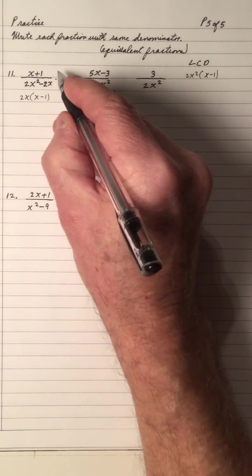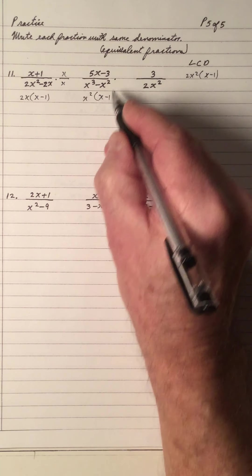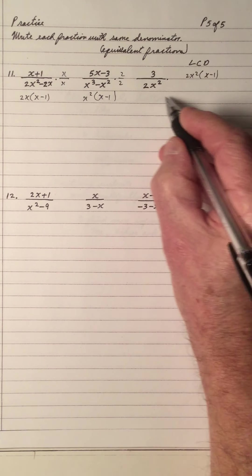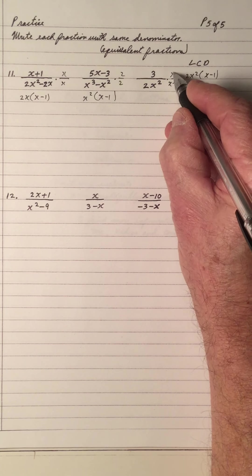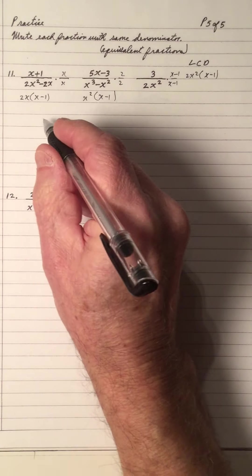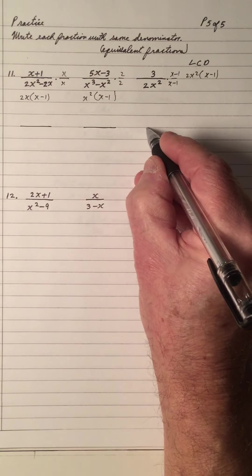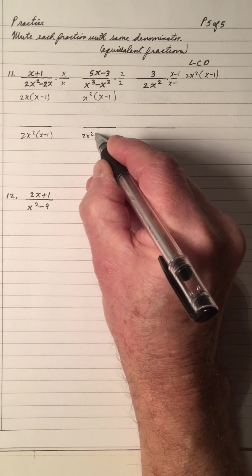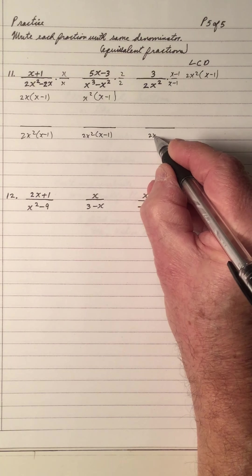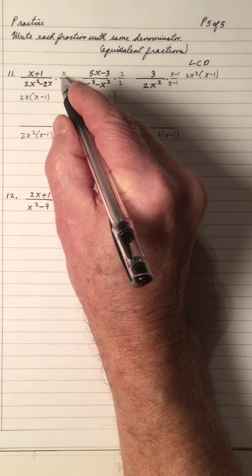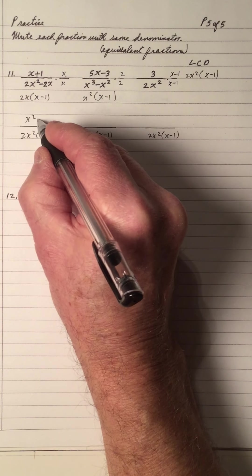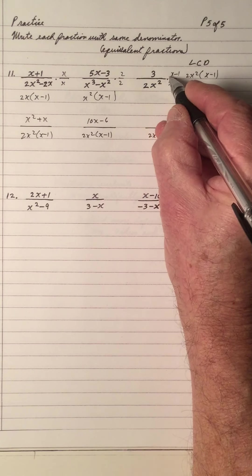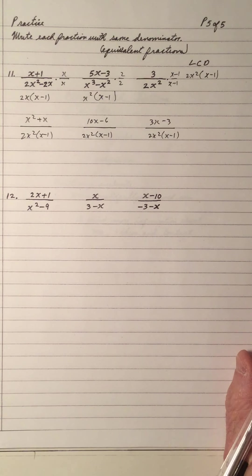If you put it on the bottom, you have to put it on the top. All these denominators are the same: 2x squared, x minus 1 — for all three. Multiply the numerators: x squared plus x; 2 times gives 10x minus 6; 3 times gives 3x minus 3. Perfect.